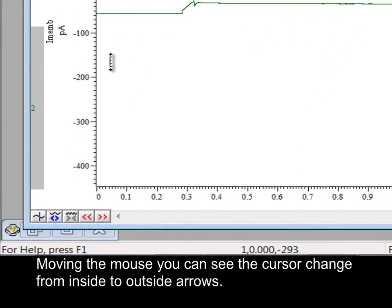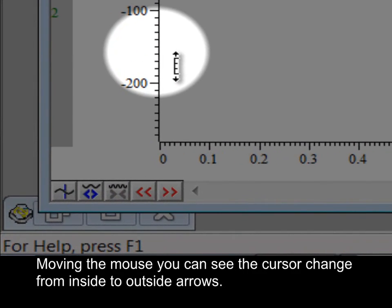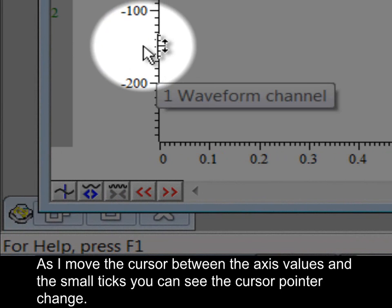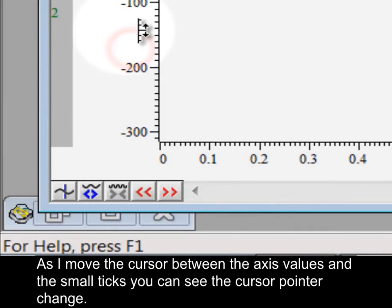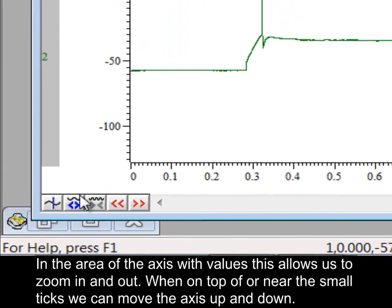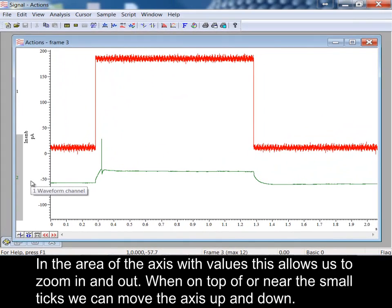Moving the mouse, you can see the cursor change from inside to outside arrows. As I move the cursor between the axis values and the small ticks, you can see the cursor pointer change. In the area of the axis with values, this allows us to zoom in and out. When on top of or near the small ticks, we can move the axis up and down.